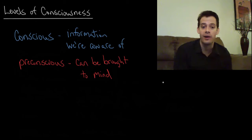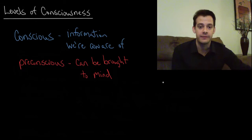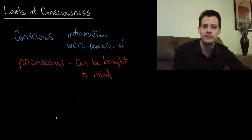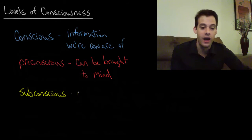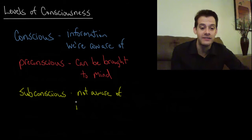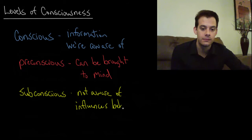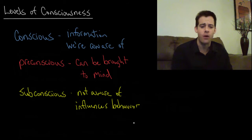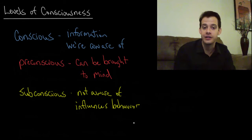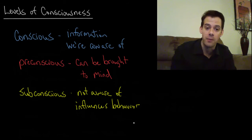Now there's some information that you can't readily bring to mind — that you're not aware of at the time that you're doing something — but it still influences your behavior. This is what we call the subconscious. The subconscious is something that you're not aware of but it does influence your behavior. You might be able to look back and say, okay, I wasn't aware of this at the time, but it was actually influencing my thought or my behavior, and so that might be something we would consider to be subconscious.